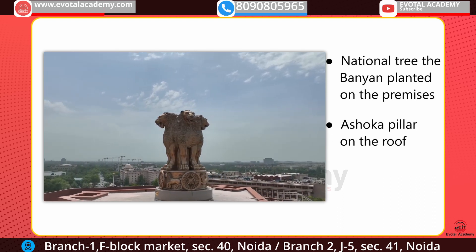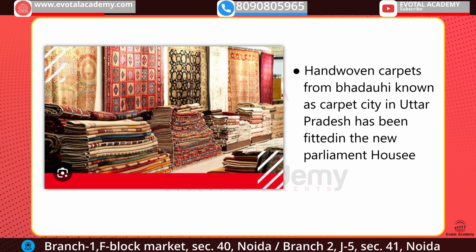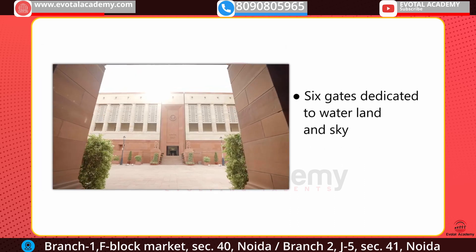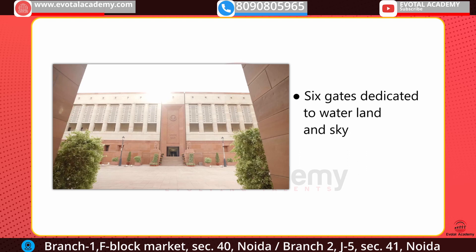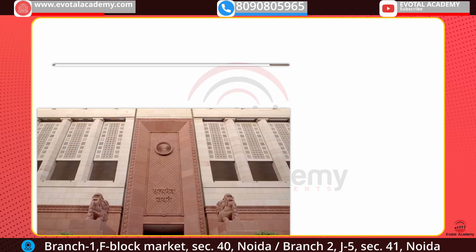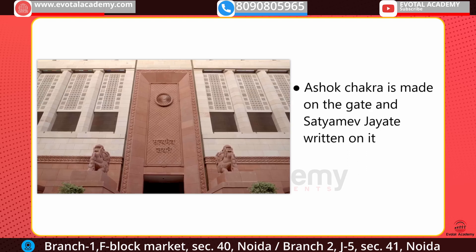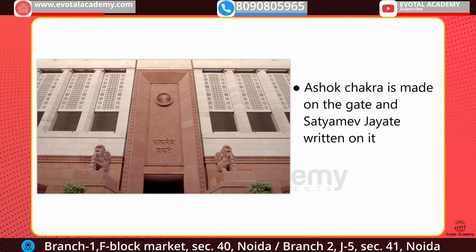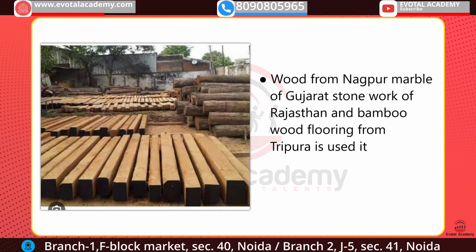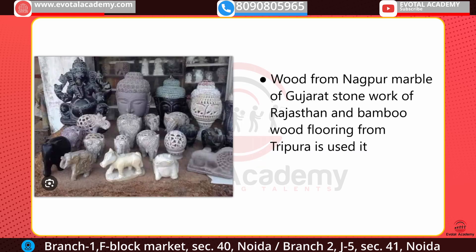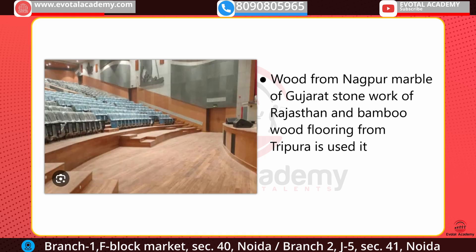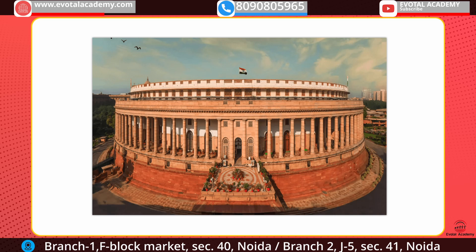Hand-woven carpets from Bhadohi, which is known as the Carpet City of Mukhtar Pradesh, have been fitted in the new parliament house. There are six gates dedicated to water, land, and sky. On the gates, the Ashoka Chakra has been made and 'Satyamev Jayate' is written. Woods from Nagpur, marble of Gujarat, stonework of Rajasthan, and bamboo wood flooring from Tripura have been used.